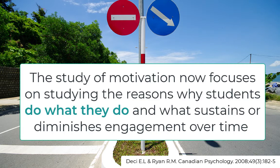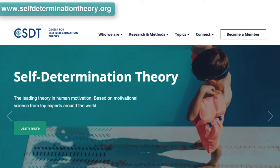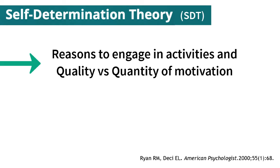This is precisely why the way in which we study motivation and its influence on the learning environment has changed over the past years, paying less attention to how to control students' behavior and more to studying the reasons why students do what they do and what sustains or diminishes engagement over time. The self-determination theory of motivation postulates that the reasons to engage in a certain activity and the quality of motivation are far more relevant than simply being or not motivated, or how frequently you engage in an activity, and that these reasons explain the maintenance of behaviors in the long term.